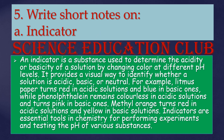Write short notes on indicator. An indicator is a substance used to determine the acidity or basicity of a solution by changing color at different pH levels. It provides a visual way to identify whether a solution is acidic, basic or neutral. For example, litmus paper turns red in acidic solutions and blue in basic ones. Phenolphthalein remains colorless in acidic solutions and turns pink in basic ones. Methyl orange turns red in acidic solutions and yellow in basic solutions. Indicators are essential tools in chemistry for testing the pH of various substances.